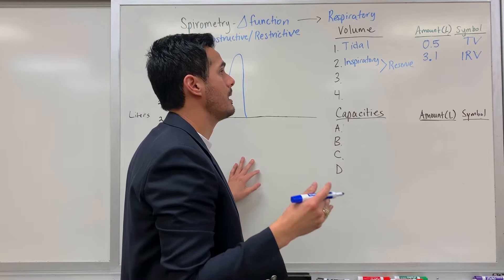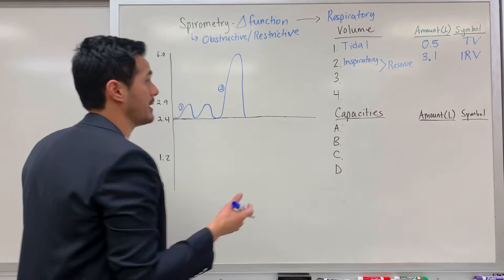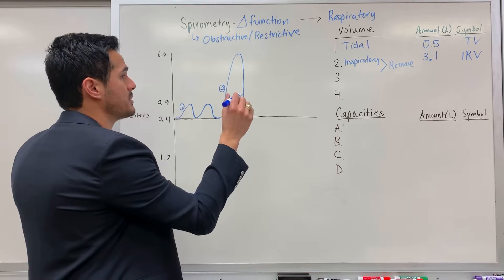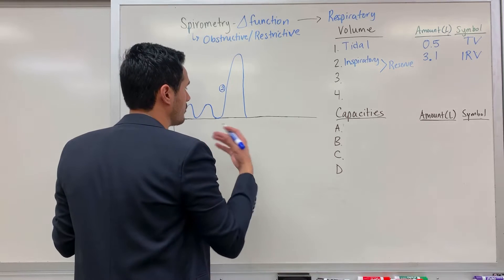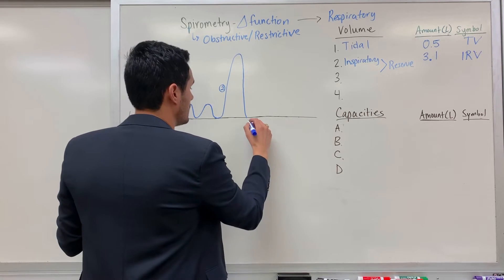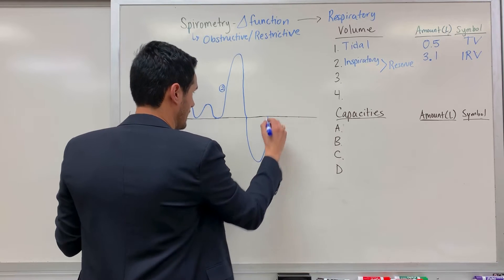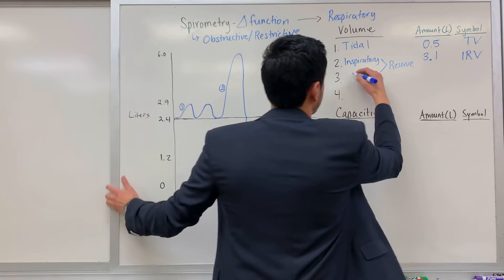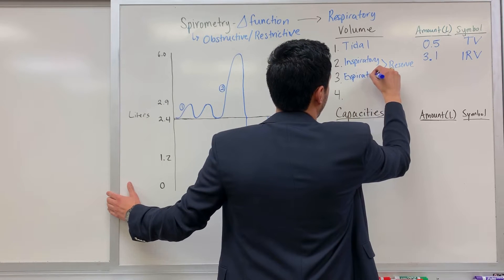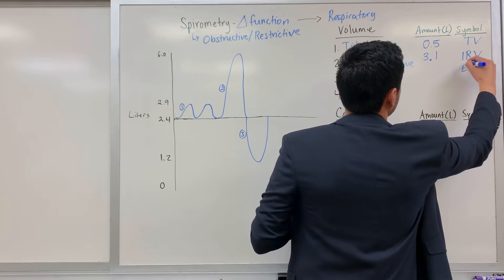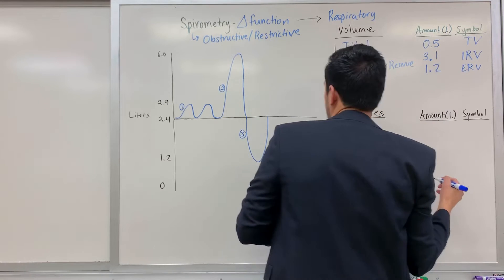So we have the inspiratory reserve, this is the air that we forcefully inhale, and then we forcefully exhale. As it goes down, here, this is number three, this is known as the expiratory reserve volume. The ERV, and a typical value for this is roughly 1.2.